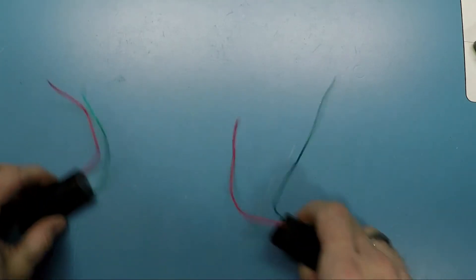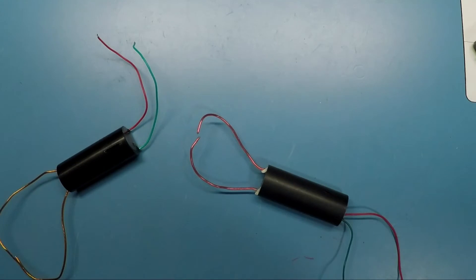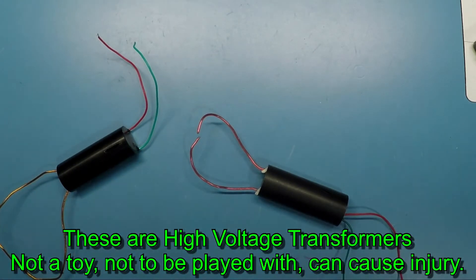They were actually stun gun modules and as brave as he is, braver than me, he actually took one and ran it across himself. Now usually when you run these modules open you cause a problem. You burn out the circuit inside of them.